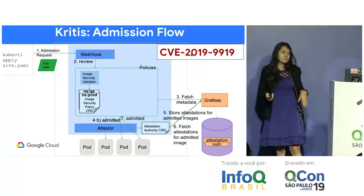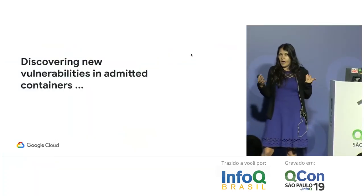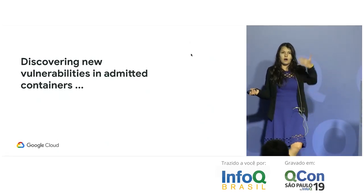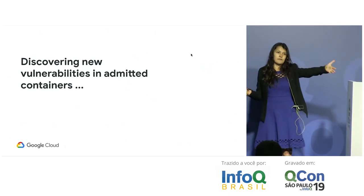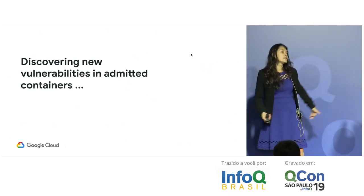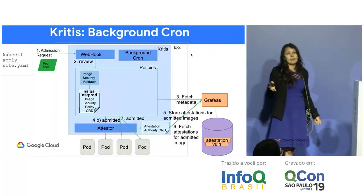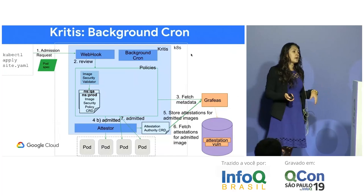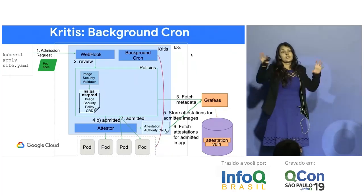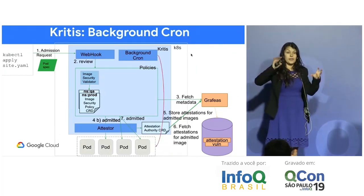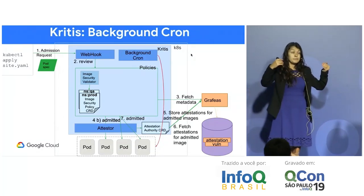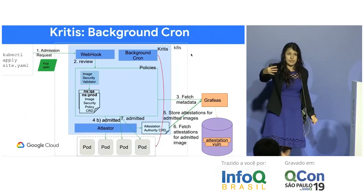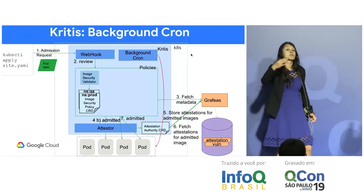What about new vulnerabilities discovered later — like Heartbleed? We don't want to ignore those. Kritis has a background cron job that periodically inspects running pods and checks them against the image security policy. If a pod no longer satisfies the policy, it adds labels and annotations to mark it, so the cluster admin can react to that.